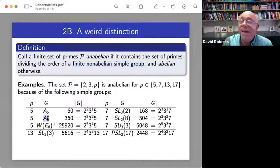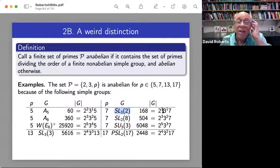So definition. Let's call a finite set of primes P an-abelian if it contains the set of primes dividing the order of a finite non-abelian simple group and abelian otherwise. So this is a pretty weird definition.